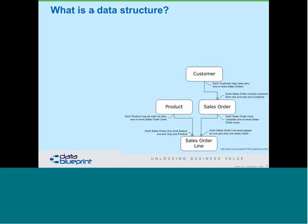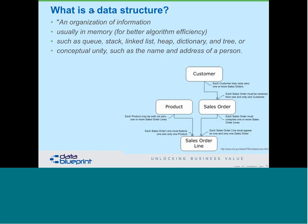Here's an example data structure definition from NIST — the National Institute of Standards and Technologies. A data structure is an organization of information, usually in memory. Note that data stored on disk may be organized differently than how it's processed inside the computer. For efficiency, data structures are named as queues, stacks, linked lists, heaps, dictionaries, and trees — familiar to those with a computer science background. Another aspect is their definition as a conceptual unity, meaning one thing: for example, linking me with my address is a householding construct — Peter lives at that house until he doesn't.